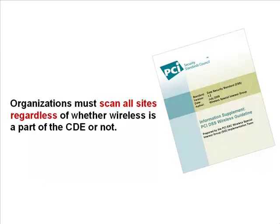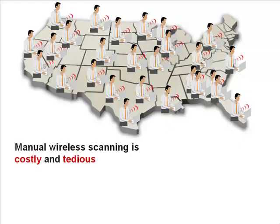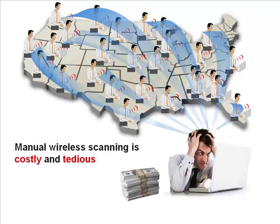PCI data security standards require all merchants to routinely scan their cardholder environment for unauthorized Wi-Fi, regardless of whether Wi-Fi is deployed or not in the cardholder data environment. If you're still performing quarterly wireless vulnerability scanning with a mobile analyzer, you're wasting both money and time without improving data security.